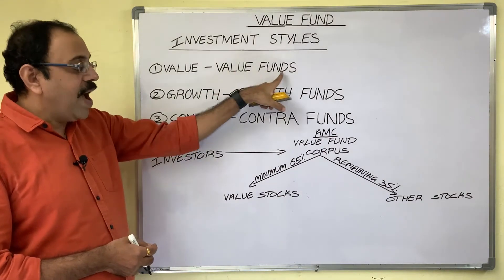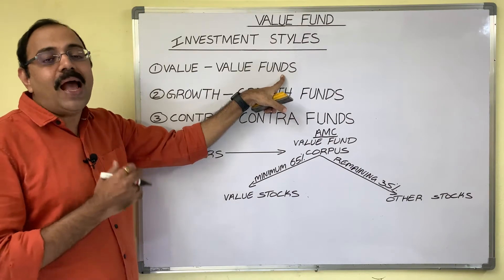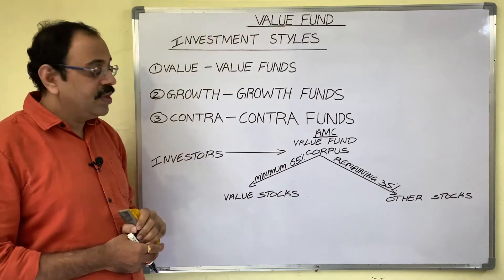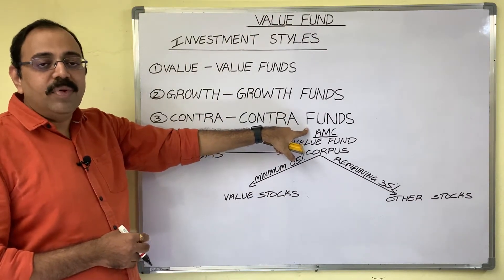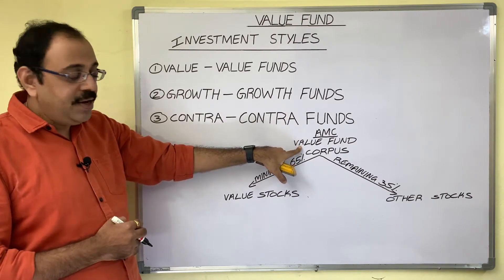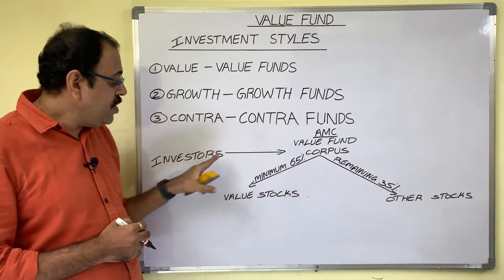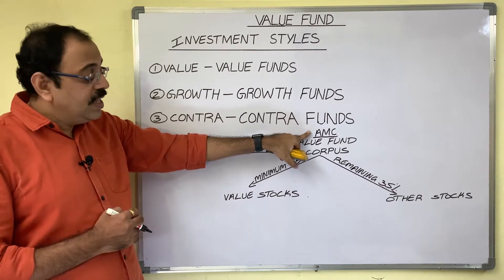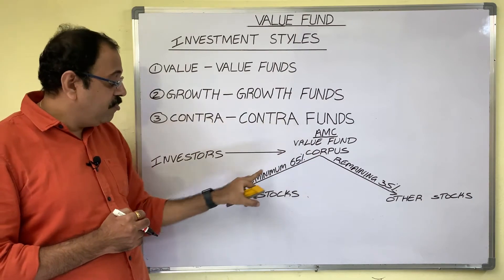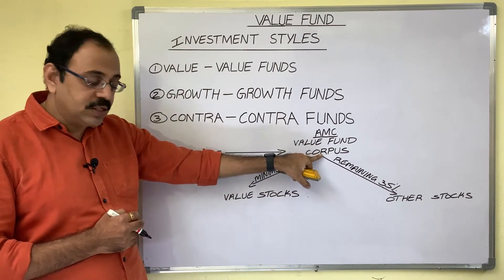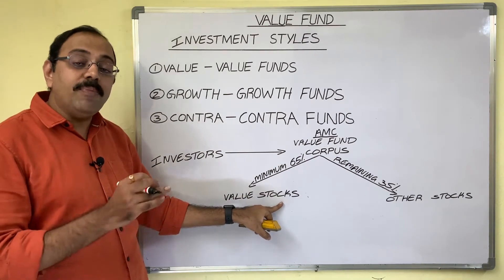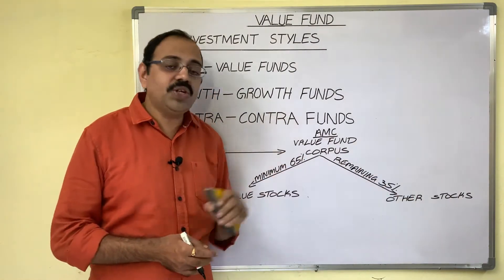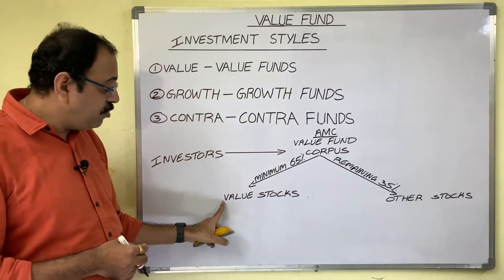In this video we will explore value funds and discuss important aspects of these funds. For example, one asset management company launched a value fund scheme and collected corpus from investors. The fund manager must invest the maximum portion — at least 65% of the corpus — in value stocks of public limited companies. The remaining 35% may be invested in other stocks.